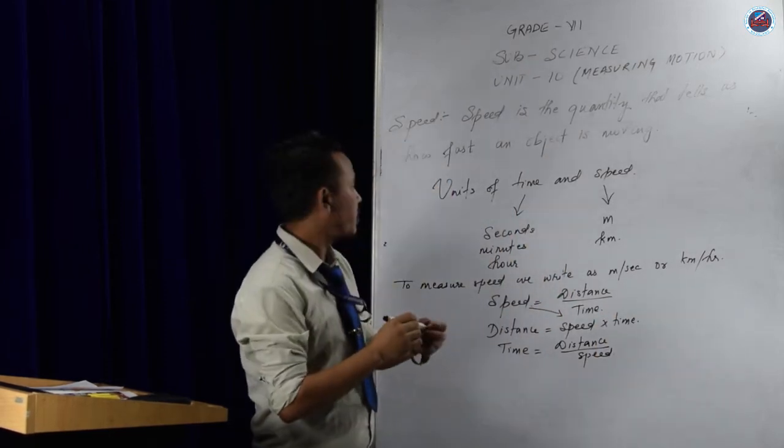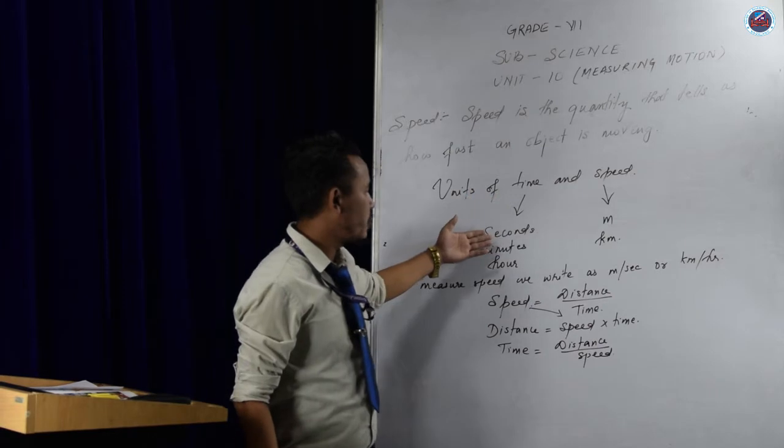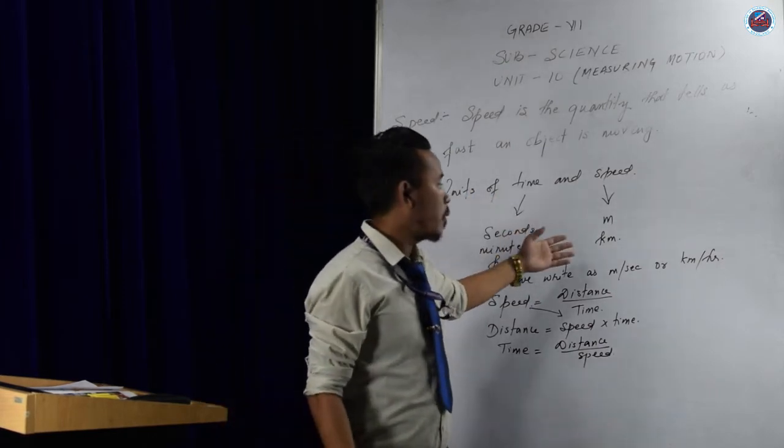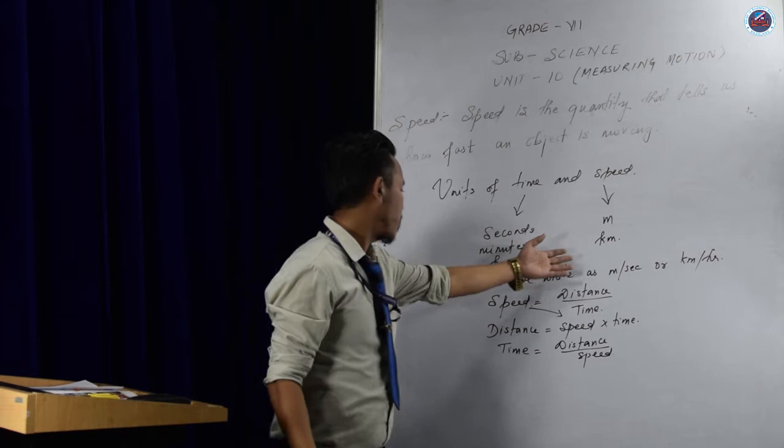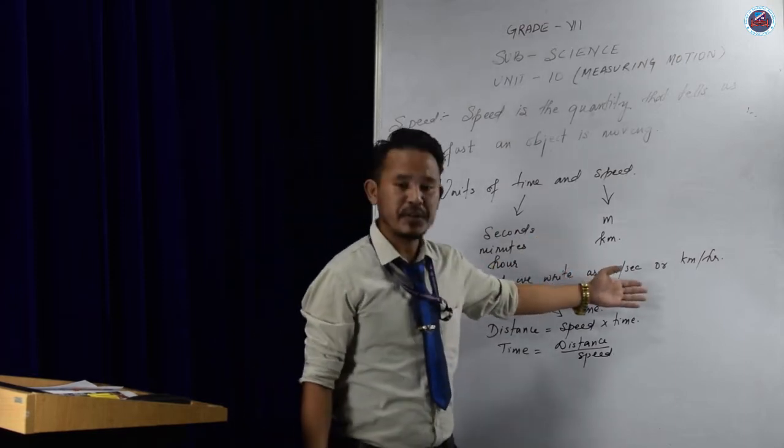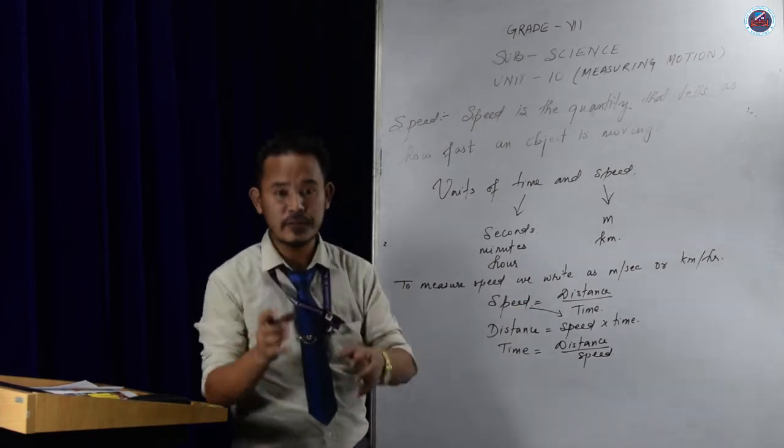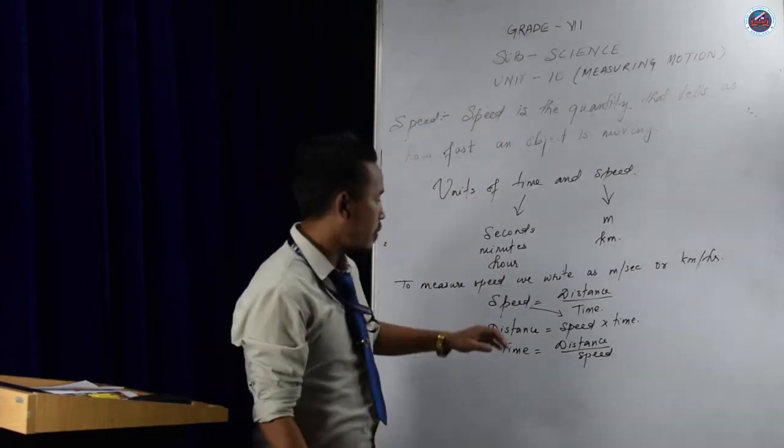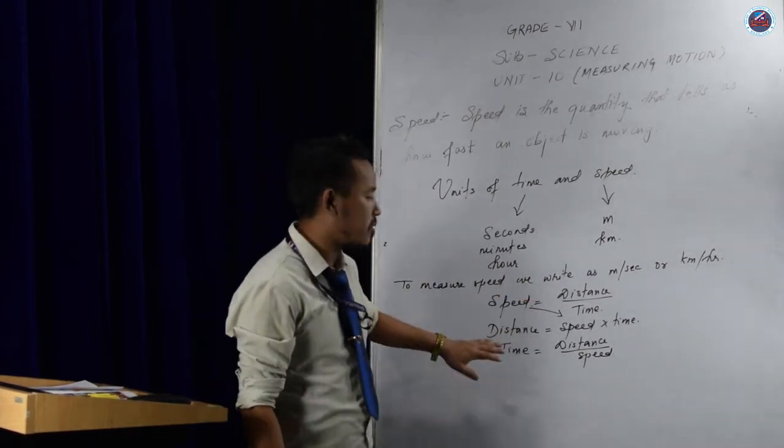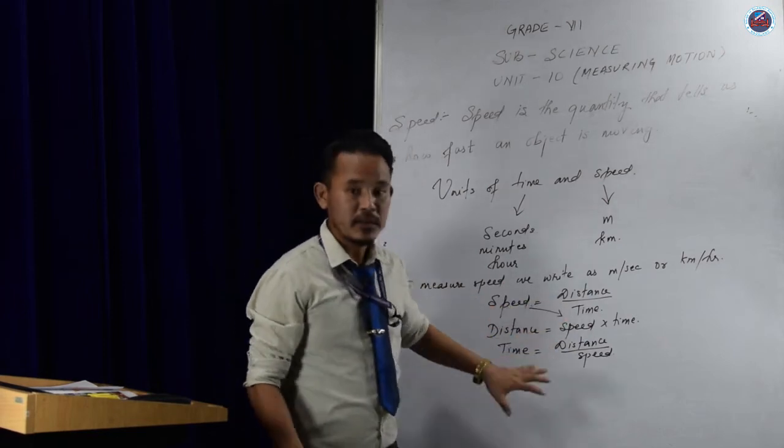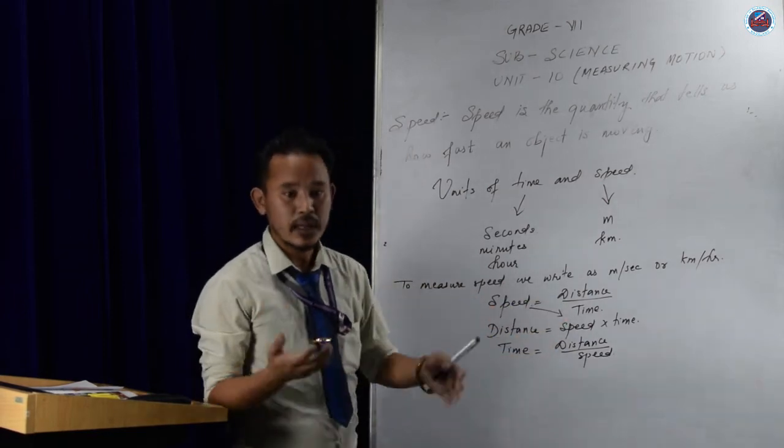Once again, the units of time and speed. For time, we use seconds, minutes, and hour. And for speed, we use meter or kilometer. To measure speed, we write as meter per second or kilometer per hour. This is a very small formula which is very important for you. You should always remember that in order to calculate the speed or the distance or the time, we use this formula to make it easier for us for calculating.